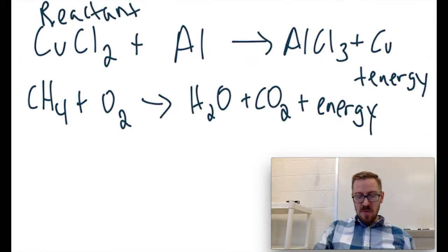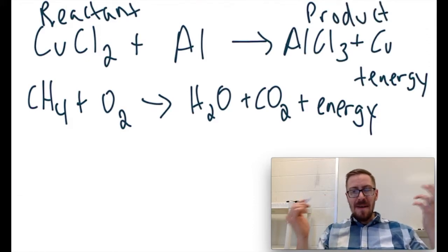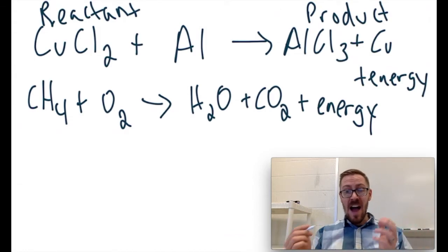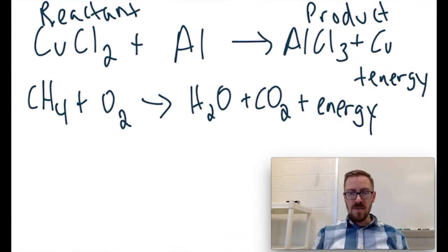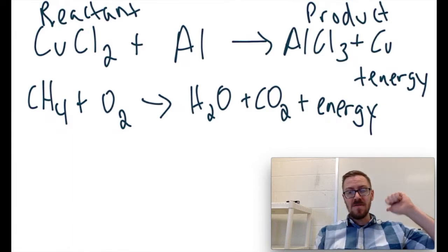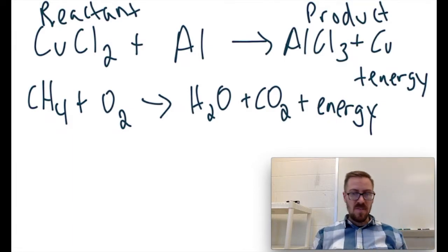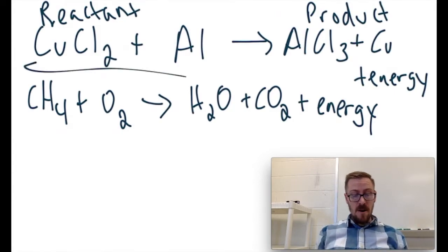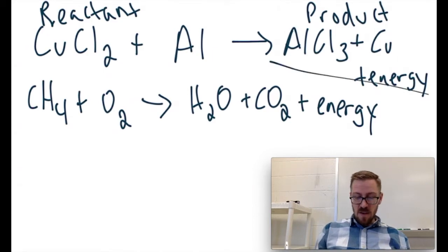And this side would be a product. Think about it like products come out of a factory, so they come out of a reaction too. So products are what come out of a reaction. Reactants are the chemicals that go into a reaction. So whatever's left of the arrow over here are your reactants. Whatever's right of the arrow over there are your products.